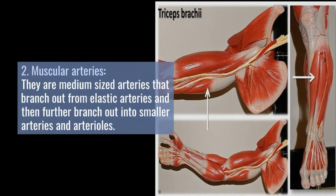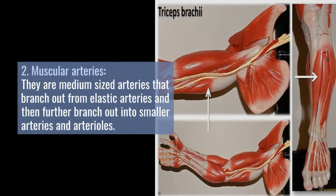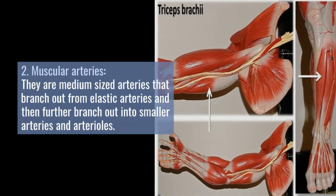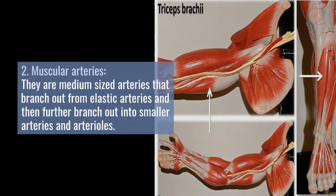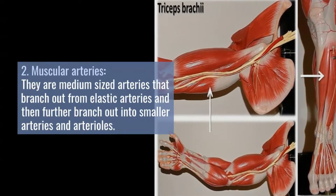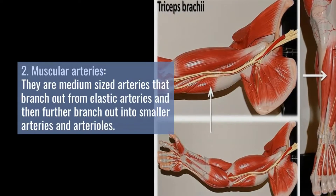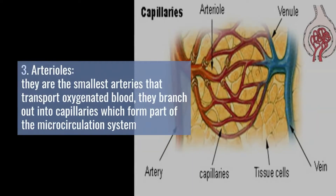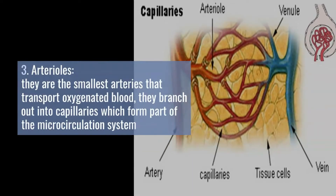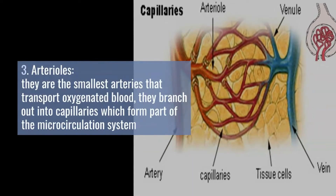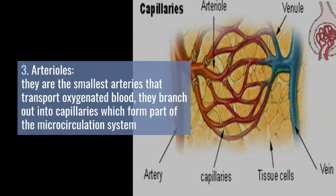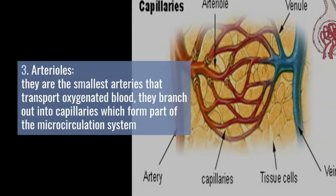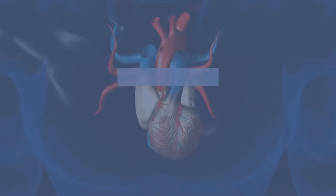Second, muscular arteries: they are medium-sized arteries that branch out from elastic arteries and then further branch out into smaller arteries and arterioles. Third, arterioles: they are the smallest arteries that transport oxygenated blood, and they branch out into capillaries which form part of the microcirculation system.